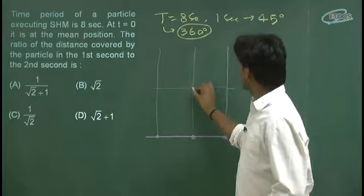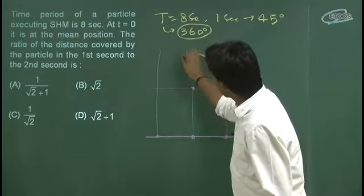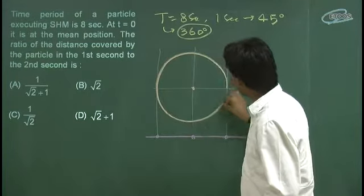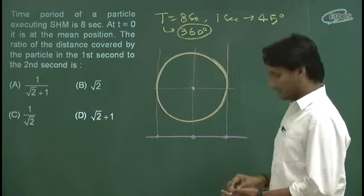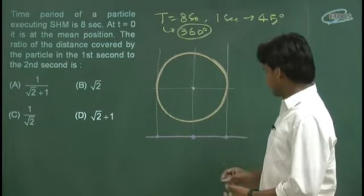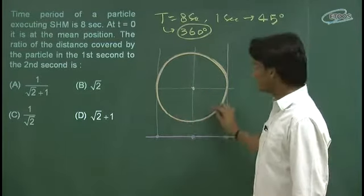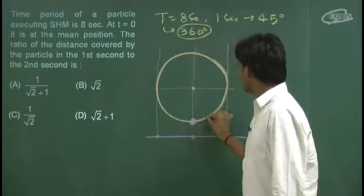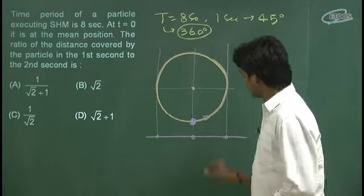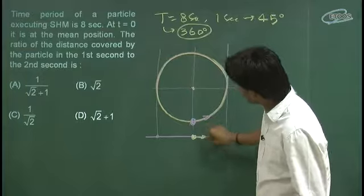To agar in 2 points ke beech mein wo SHM kar raha hai, to is tarike se circle draw karna padega hame. Particle is path pe motion kar raha hai. T is equal to 0 pe particle yaha pe hai or is taraf ja raha hai. Iska matlab iski shadow yaha pe hogi or is taraf jaate hue milegi.